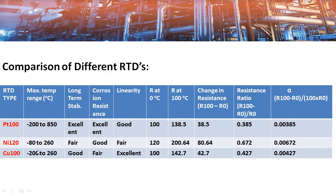Here you can see the comparison of different RTDs. Three RTDs are compared with respect to three metals: PT100, Nickel 120, and Copper 100. The number in the sensor name indicates the resistance at 0°C — for example, platinum 100 has 100 ohms at 0°C, and nickel 120 has 120 ohms at 0°C. Platinum sensors have the highest temperature range and best long-term stability, followed by copper and then nickel. Corrosion resistance is best for platinum, then nickel, then copper.